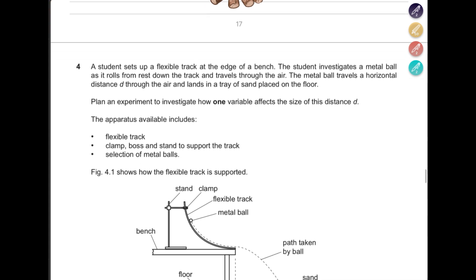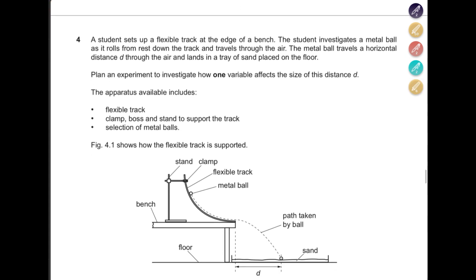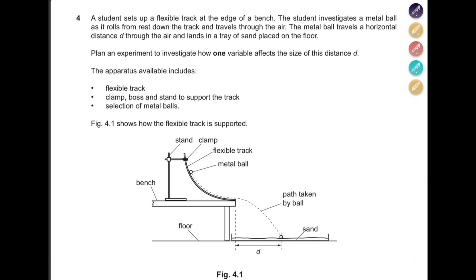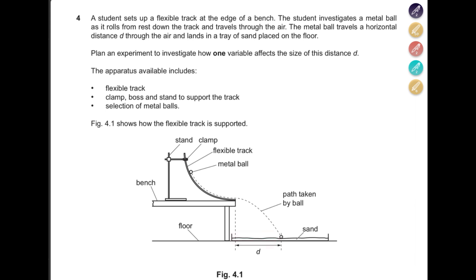A student sets up a flexible track at the edge of a bench. The student investigates a metal ball as it rolls down the track and travels through the air. The metal ball travels a horizontal distance d and lands in a tray of sand placed on the floor. Plan an experiment to investigate how one variable affects the distance d. The apparatus available includes a flexible track, clamp, boston stand, and a selection of metal balls.